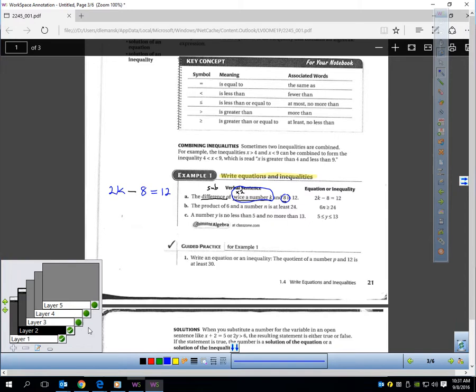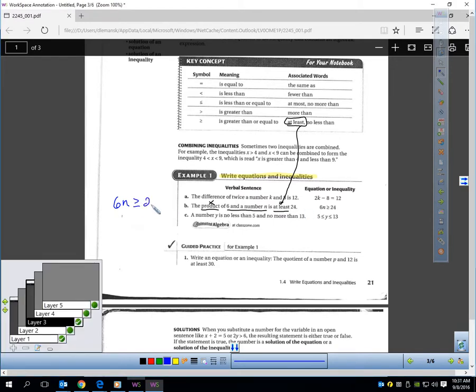Let's do the next one. Now, the product of 6 and a number n is at least 24. So, I'm multiplying 6 and n. So, let me write that down. I'm multiplying 6 and n. And I want that to be at least. I want it to be greater than or equal to 24, which shows you how they're getting that.